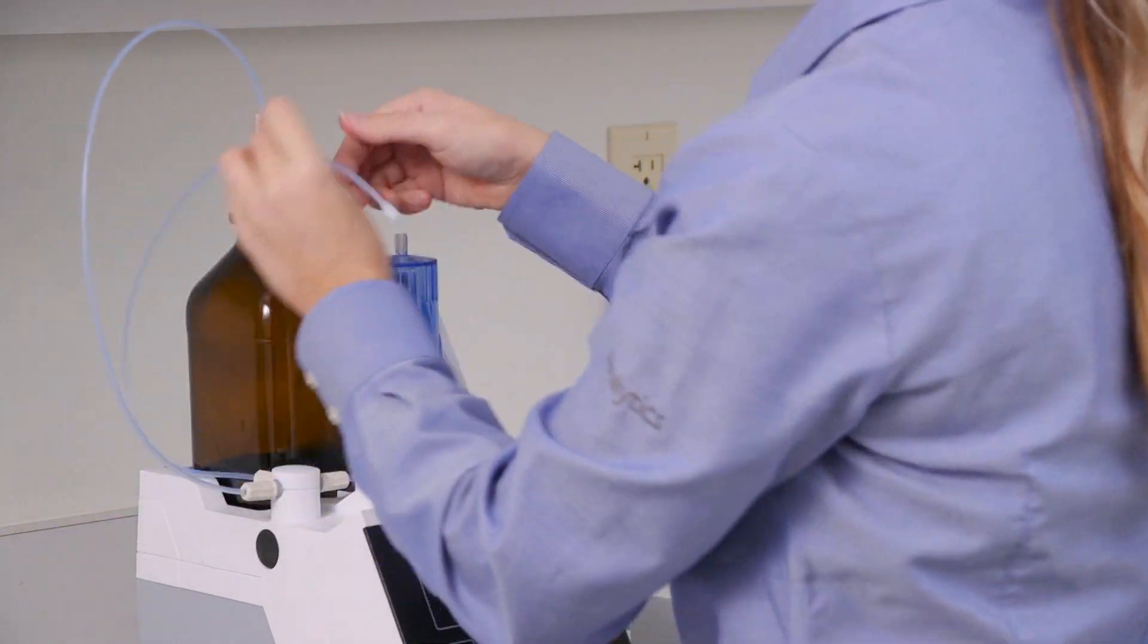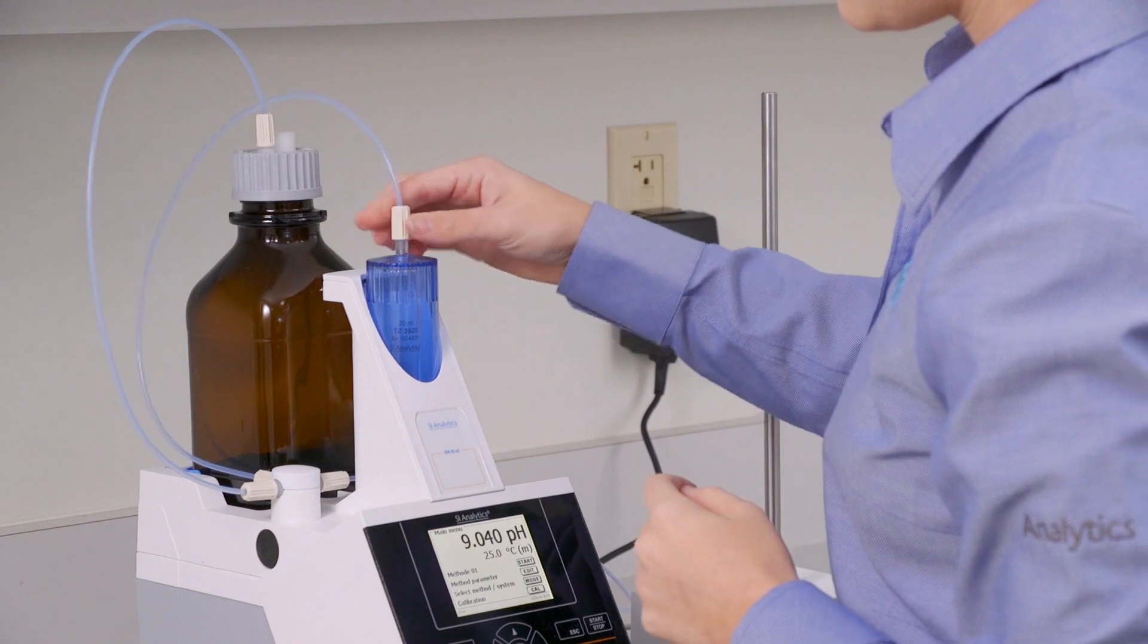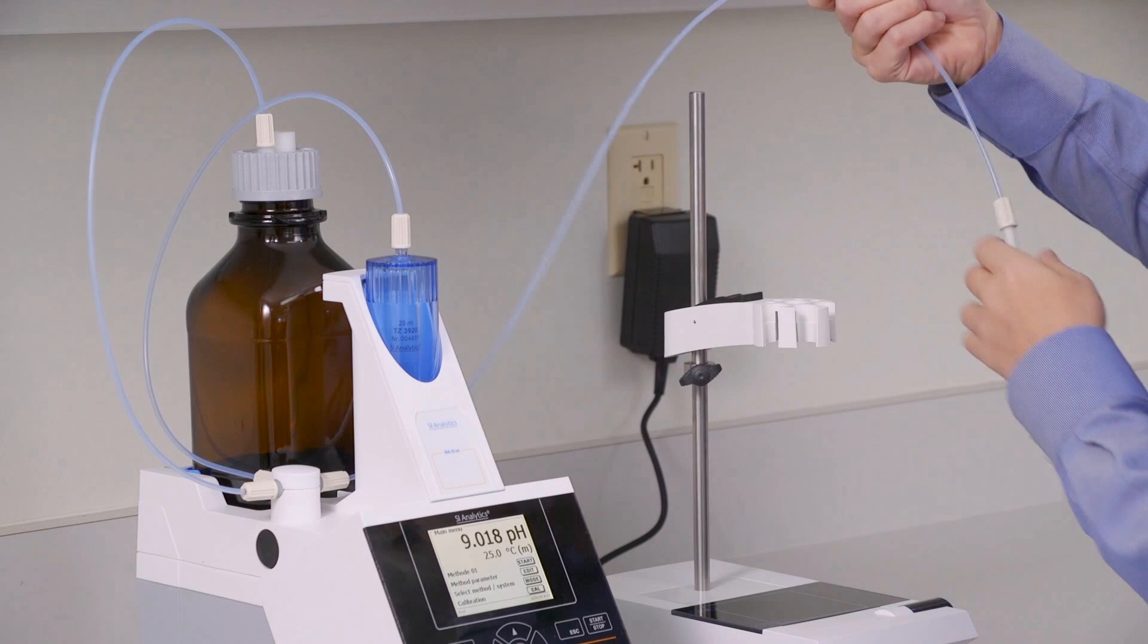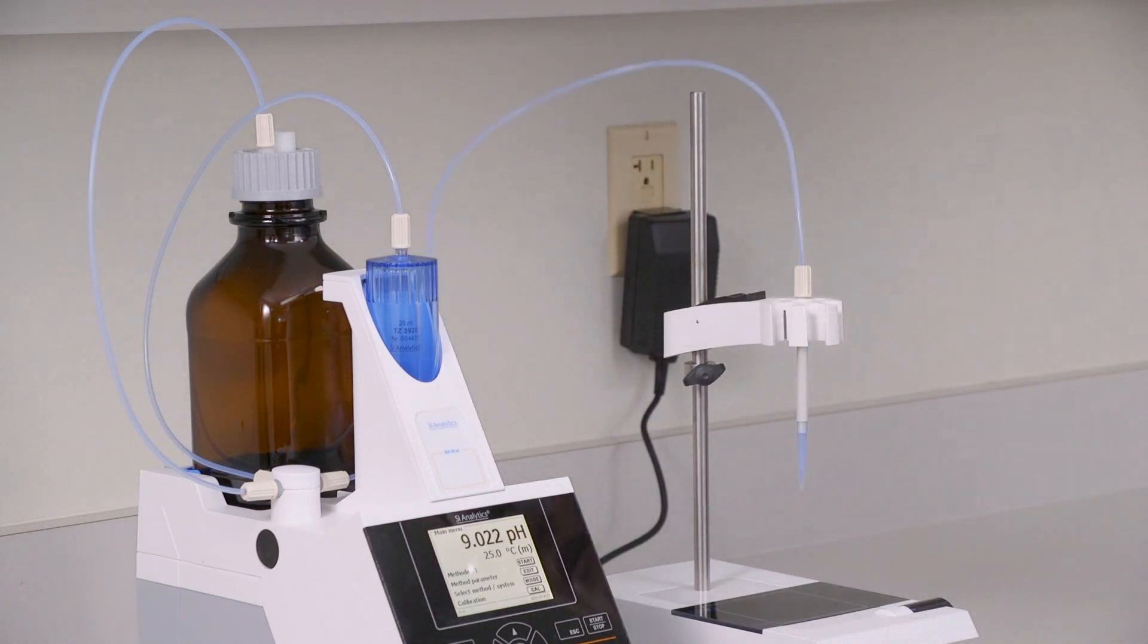You'll do the same for the other tube that goes from the back onto the top of the burette. And the last tube with the titrant tip will just go right on top of the titration clamp like that.